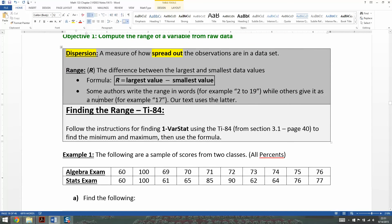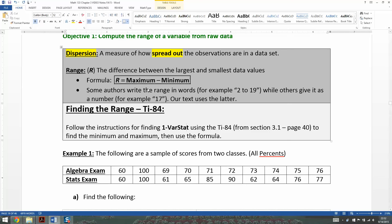Now keep in mind, some authors write it out in words. For example, our range is from 2 to 19, while others give it as a number. So you take 19, which is your max, minus your min of 2, and you subtract them, and you'll have the difference, which is 17. Our textbook uses the latter one. For our purposes, we're going to use the subtraction one. So maximum is your largest value, minimum is your smallest value.